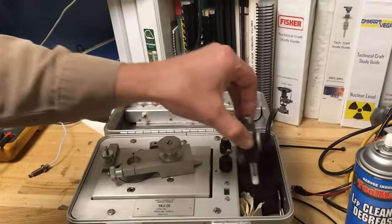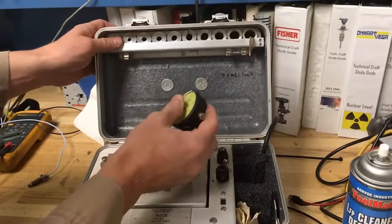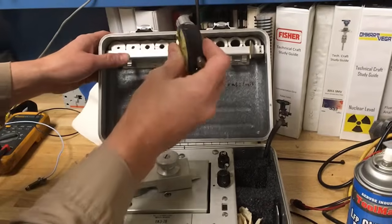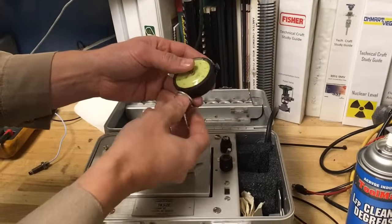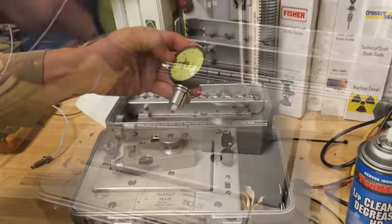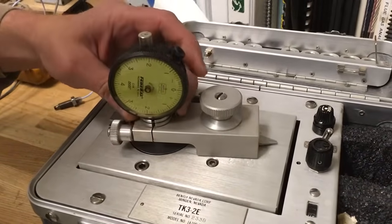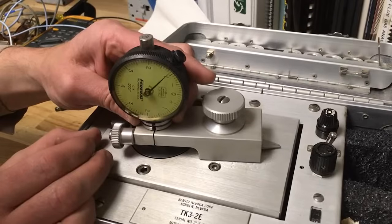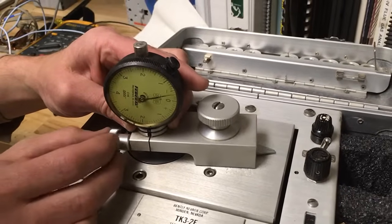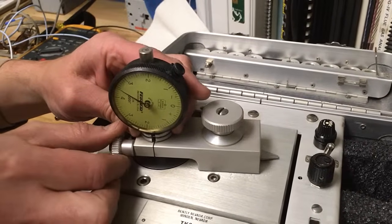Next, locate the bushing that fits the dial indicator and install it in the swing arm. Ensure the split of the bushing lines up with the split of the swing arm clamp. When you place the indicator in the assembly, let the plunger bottom out, then lift approximately ten thousandths of an inch. Secure the dial indicator by tightening the receiver.